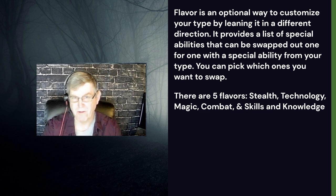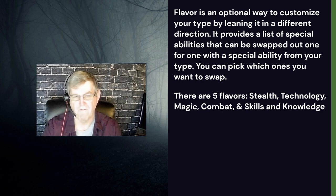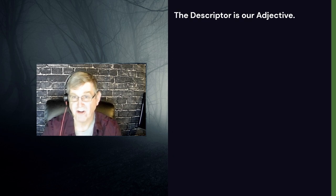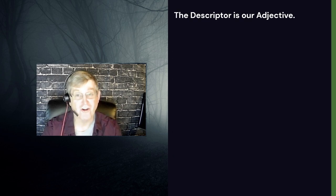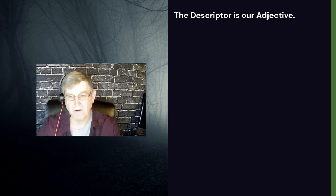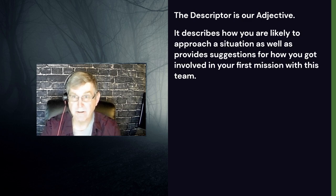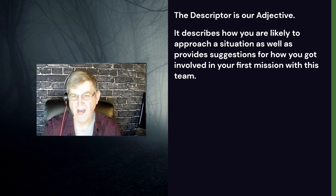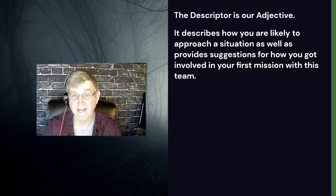Flavor is not part of our main sentence — the sentence is adjective noun who verbs. The noun is your type, and flavor is just a further description of it. Then we have the descriptor, which is our adjective. There are tons of descriptors in the Cypher System — examples include brash, calm, chaotic, charming, and clever. The descriptor describes how you're likely to approach a situation and provides suggestions for how you got involved in the first mission with the team. Descriptors also offer a one-time package of extra abilities, skills, or modifications to your stat pool.